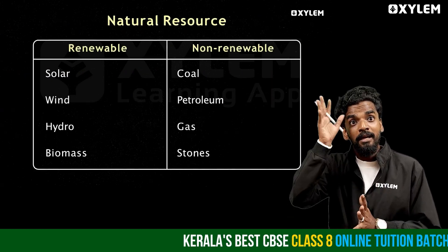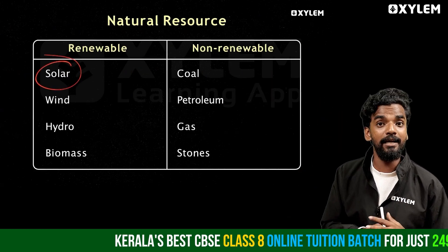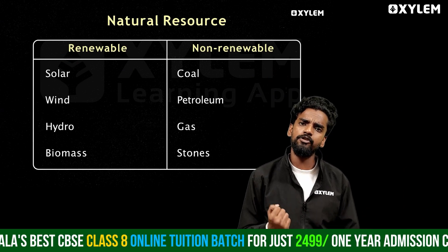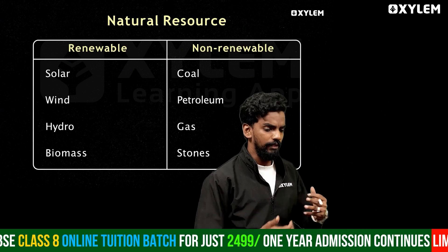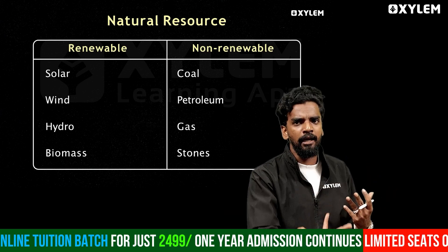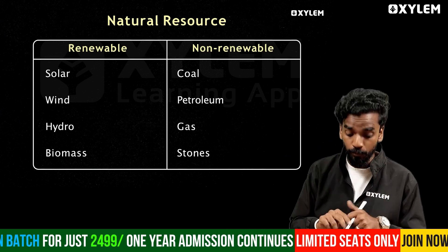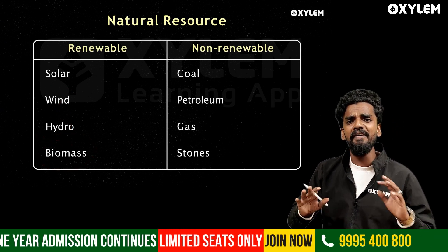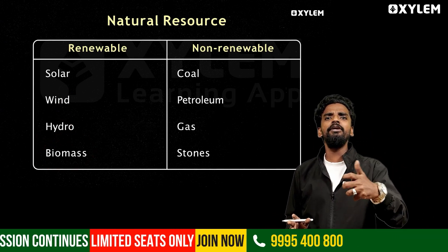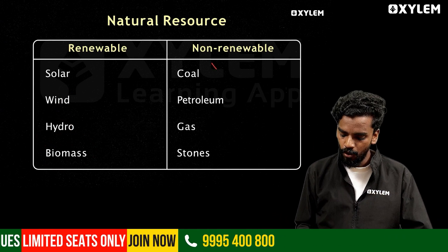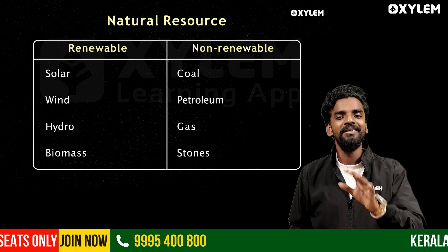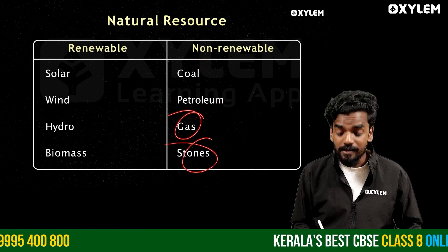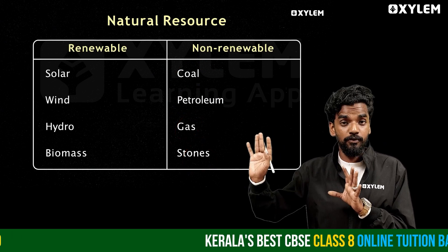Examples of renewable resources are: solar energy, wind energy, hydroelectric energy, and biomass. These are energy resources which cannot be exhausted and have low carbon emission. Non-renewable resources include coal, petroleum, gas, and stone. These are resources which can be exhausted one day and have high carbon emission.